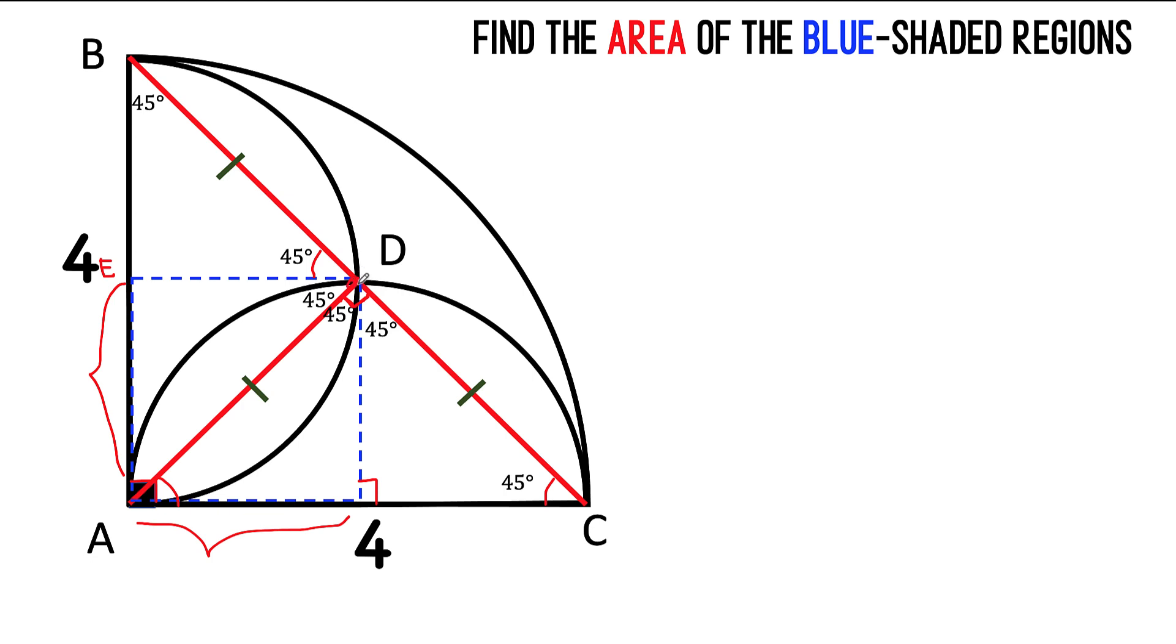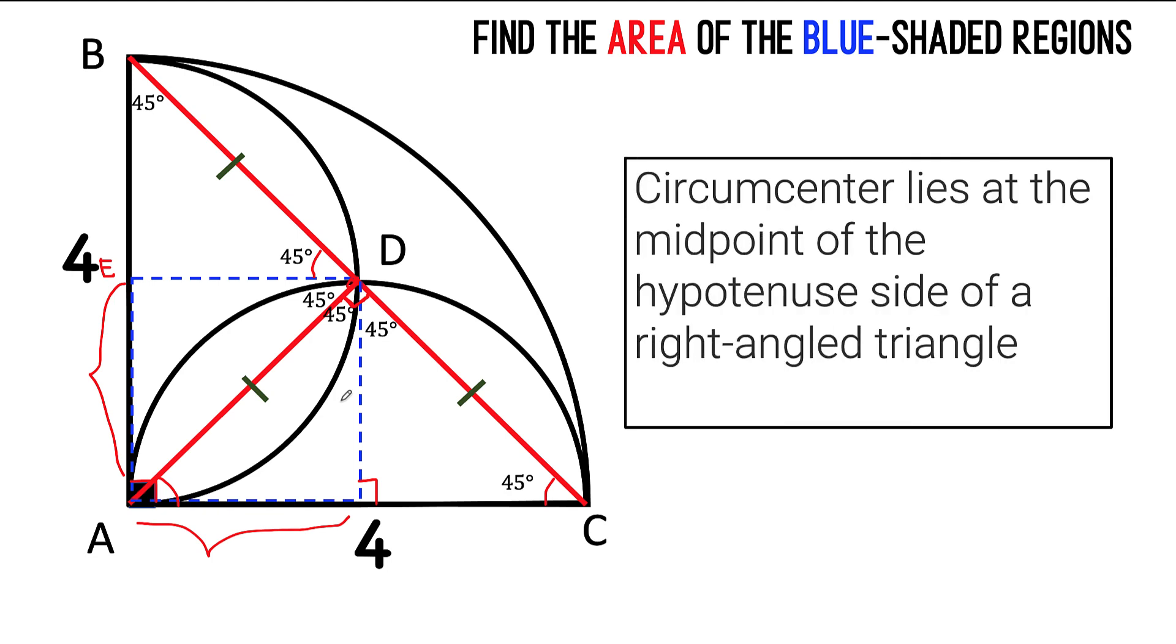And because of that, we now say that point D is equidistant to vertex B, vertex A, and vertex C of right triangle BAC. That means point D is the circumcenter of triangle ABC because the circumcenter lies at the midpoint of the hypotenuse side of a right-angled triangle.